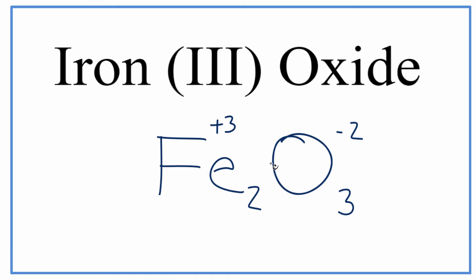So I have 2 plus 3s, so 2 times plus 3, I have a plus 6. And over here, I have 3 times minus 2. That gives me a minus 6. So plus 6 and minus 6, those will cancel out.